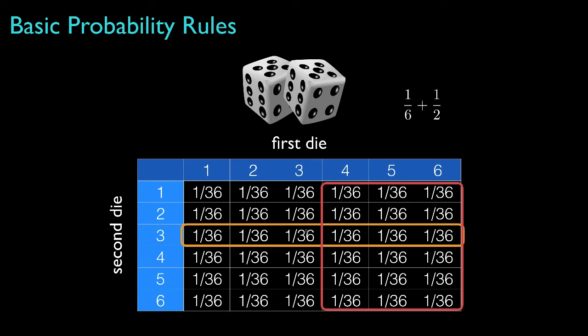To get the probability that the second die shows a three or the first die shows a number greater than three, we add the probabilities for the two events — 1/6 plus 1/2 — and then subtract the probability that both happen, which is their intersection at 3/36. So the probability for their union would be 7/12. For this problem you might find the answer more directly, but it's instructive to use simple problems like this to illustrate how these powerful rules of probability work for more general situations.